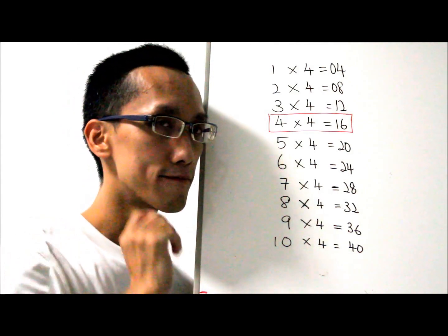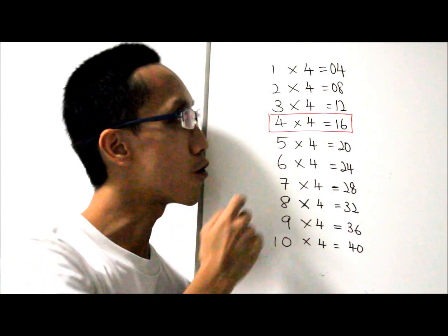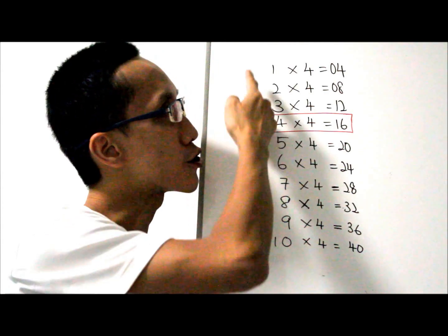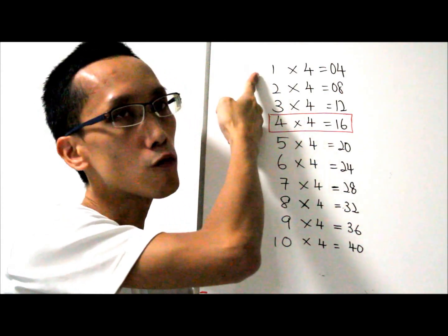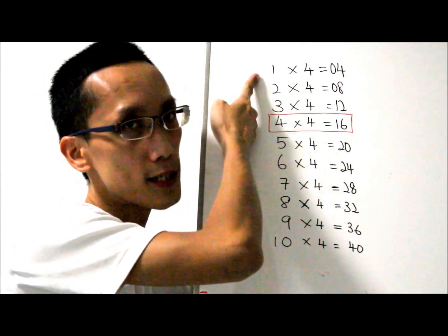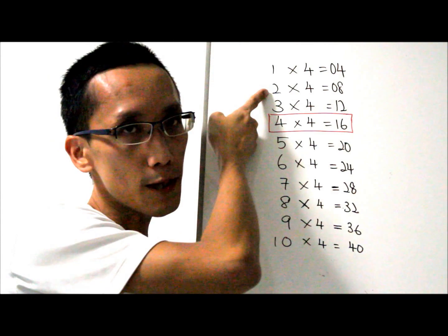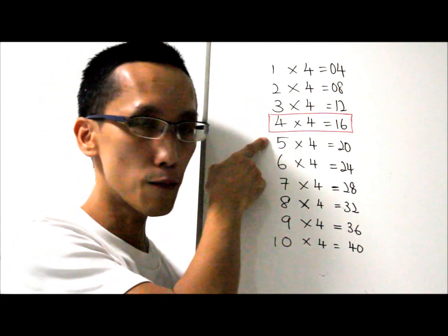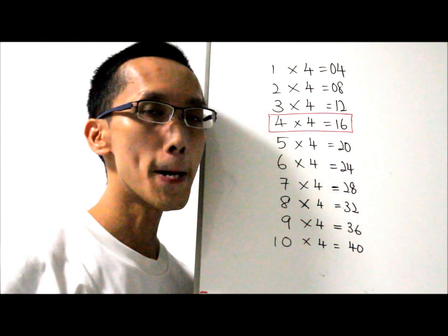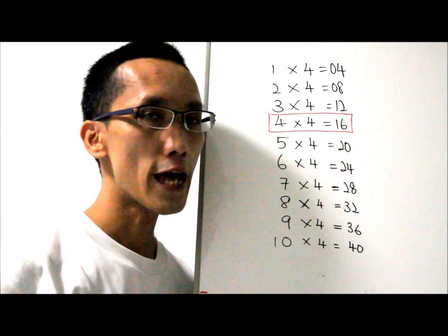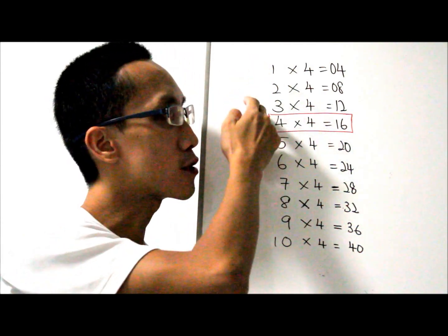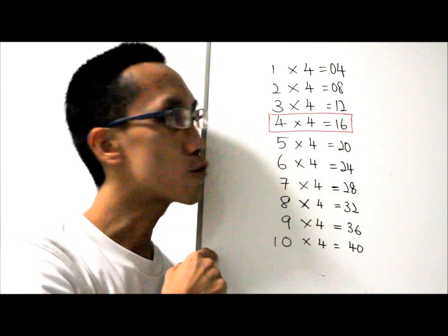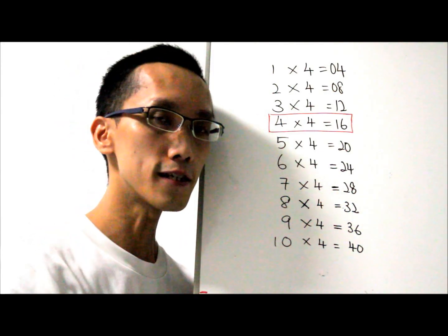Are you sure about it? Let me explain why. On our other videos, we actually tell you how to learn the 1 times table, 2 times table, 3 times table, as well as 5 times table to 12 times table. So therefore, you don't need to learn the 1, 2, 3, or 5 all the way to 12. You just need to know 4 times 4 equals 16.